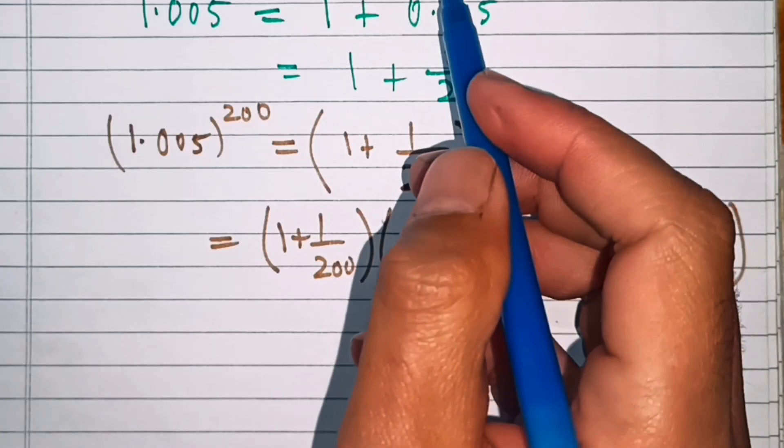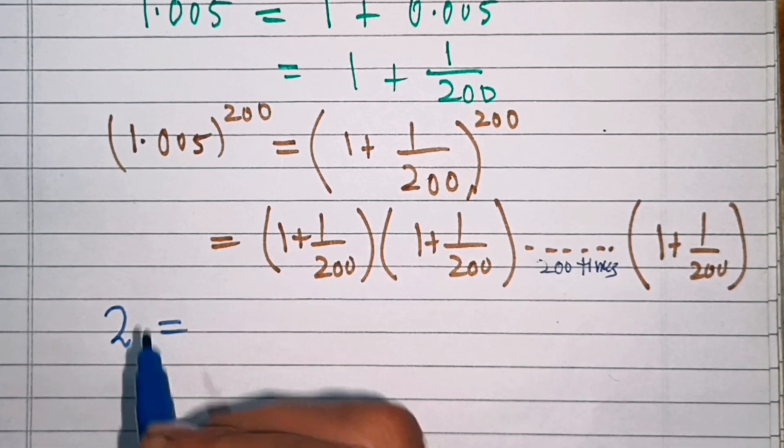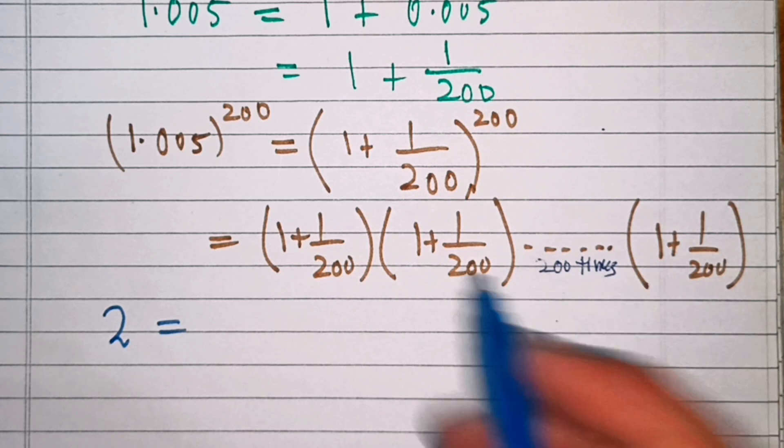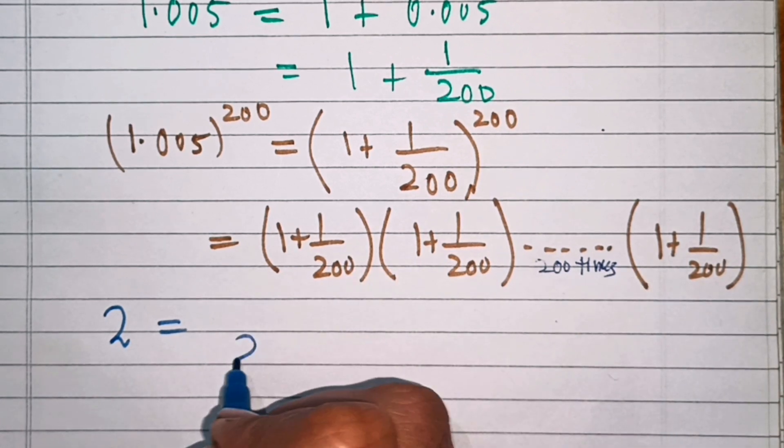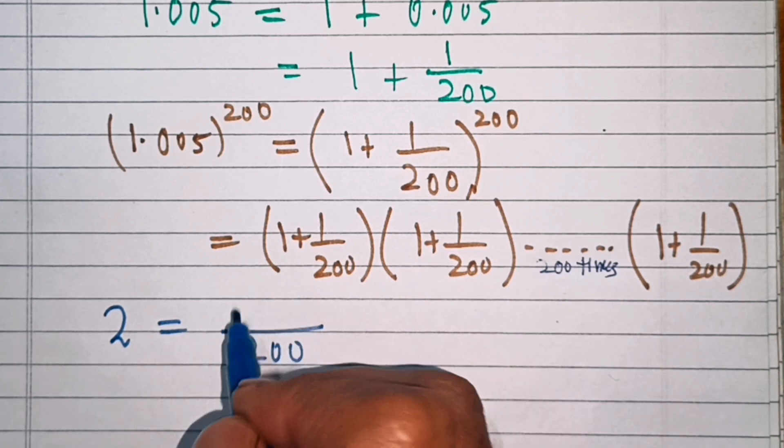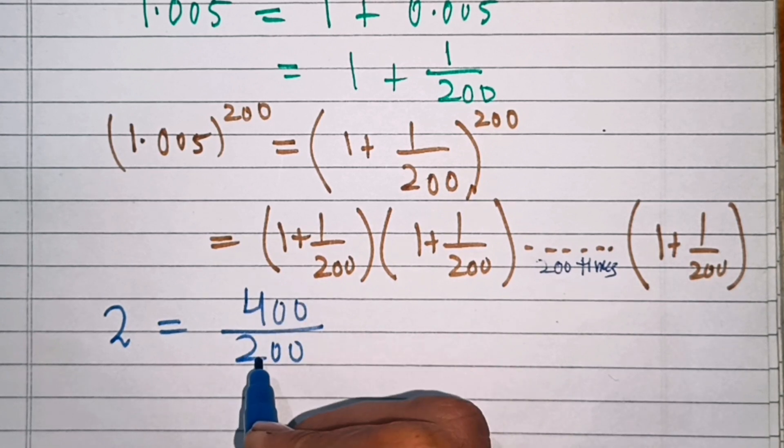And the other number that we have is 2. Since here the denominator of the fraction is 200, we will write here 200. Now what is the number that we divide by 200 to get 2? That is 400. So 400 over 200 is 2.